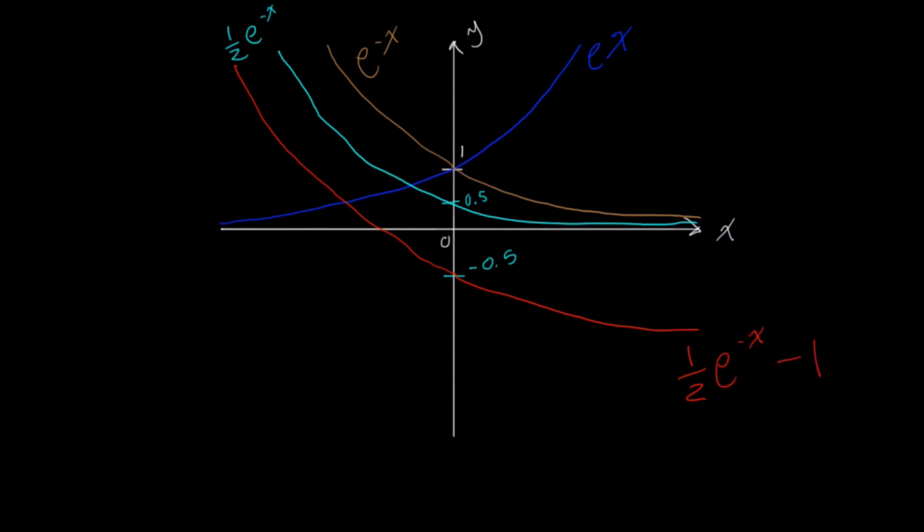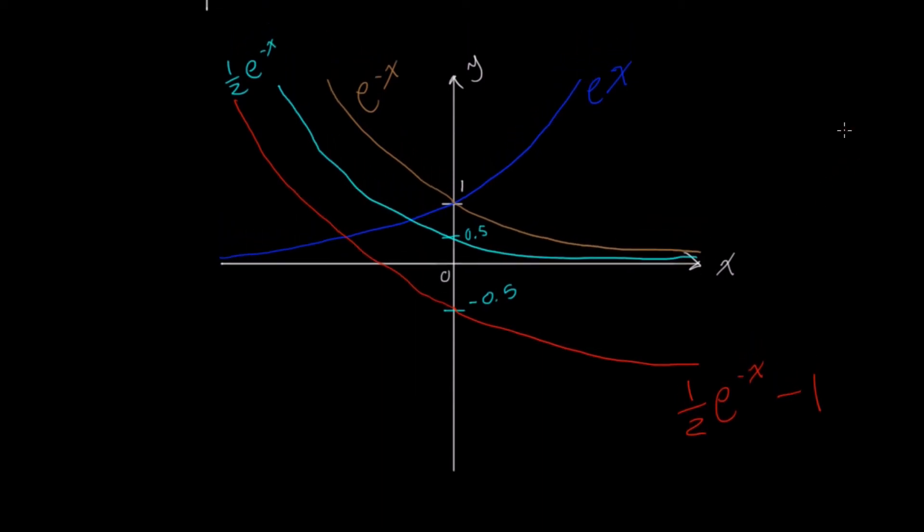So there is one-half e to the negative x minus 1. So you can do these graph transformations with any exponential graph, any exponential function. I'm just showing all this to you with e to the x, our natural exponential function.